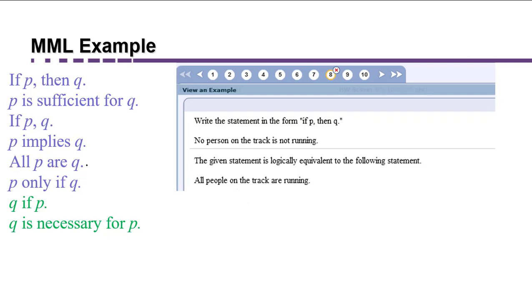So could we possibly restate that in a form that would be equivalent to all people on the track? What do we know about all people on the track if we know that no person on the track is not running? I'm going to think of this as the equivalent statement all people on the track are running. And that's going to help me because I can now match it up with all P are Q.